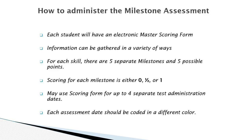Information can be gathered in a variety of ways: review of records and data, interviews with parents, other teachers and service providers, observations of the student, and direct testing of specific skills. For each skill, there are five milestones for a total of five possible points. Scoring for each milestone will either be a zero, a half a point, or one point. How you test each skill and how you determine the points the student receives is found in the assessment guide.